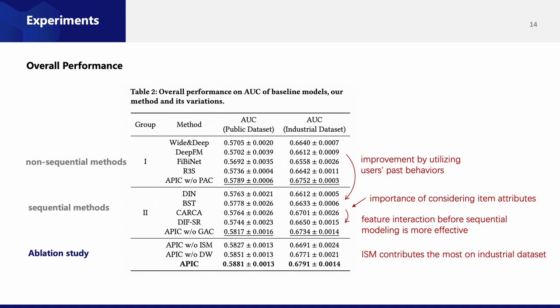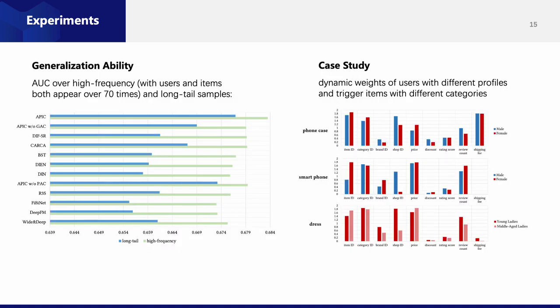In the ablation study, we can see that the item-subtracting module contributes the most improvement on the industrial dataset, which proves the effectiveness of the prior knowledge on users' scenario mindset. We also divide the testing samples from the industrial dataset into high frequency samples and long tail samples. As shown in the left figure, APIC and its variants achieve higher capability on samples that have not been frequently seen by the model, illustrating that APIC has higher generalization ability compared with others. We also output the dynamic weights and group them according to the users' profiles and trigger item categories. Figures on the right show typical cases that reveal the mindset variance over items and users.